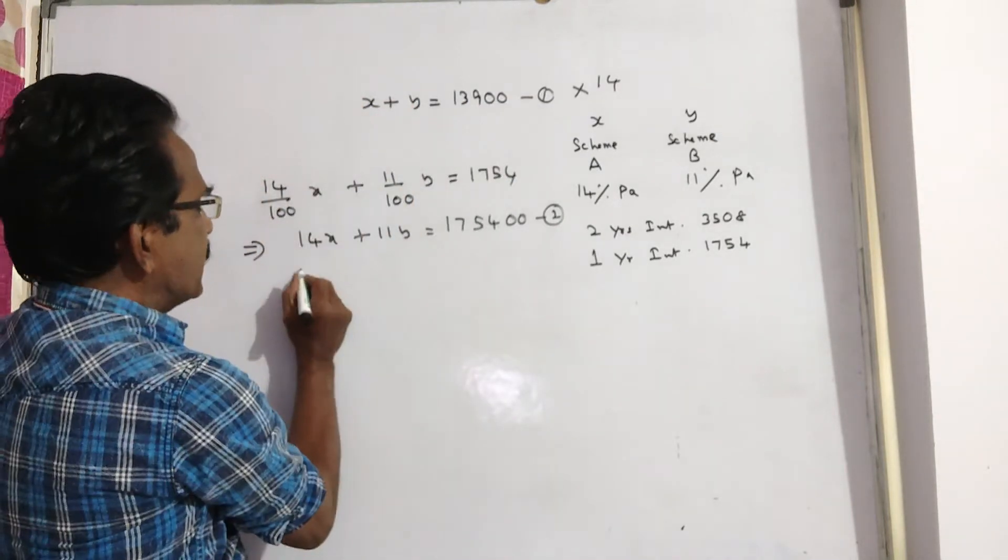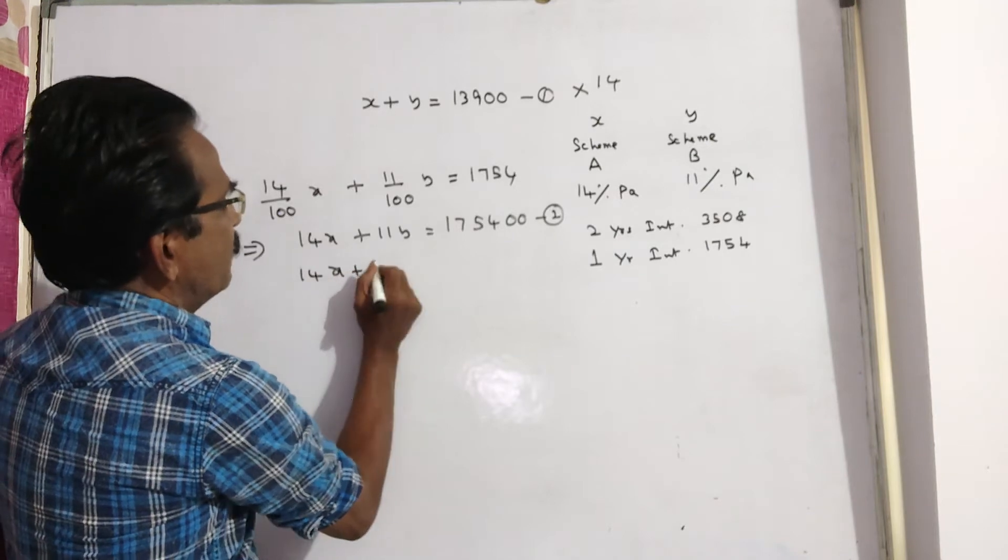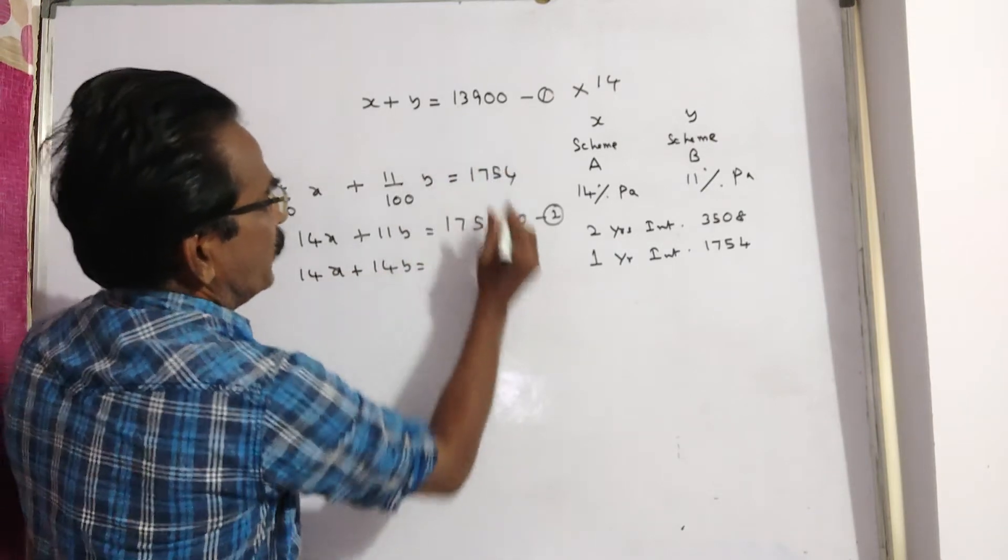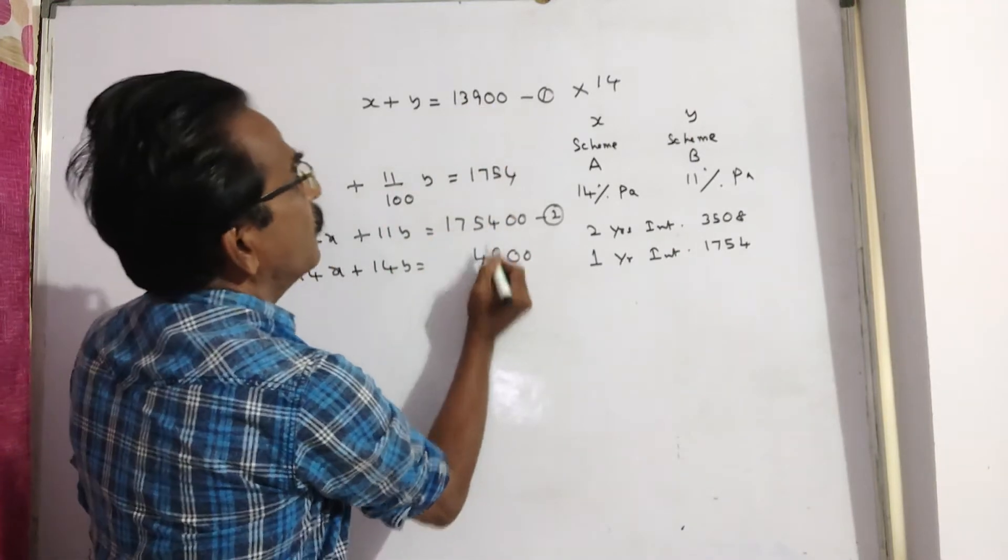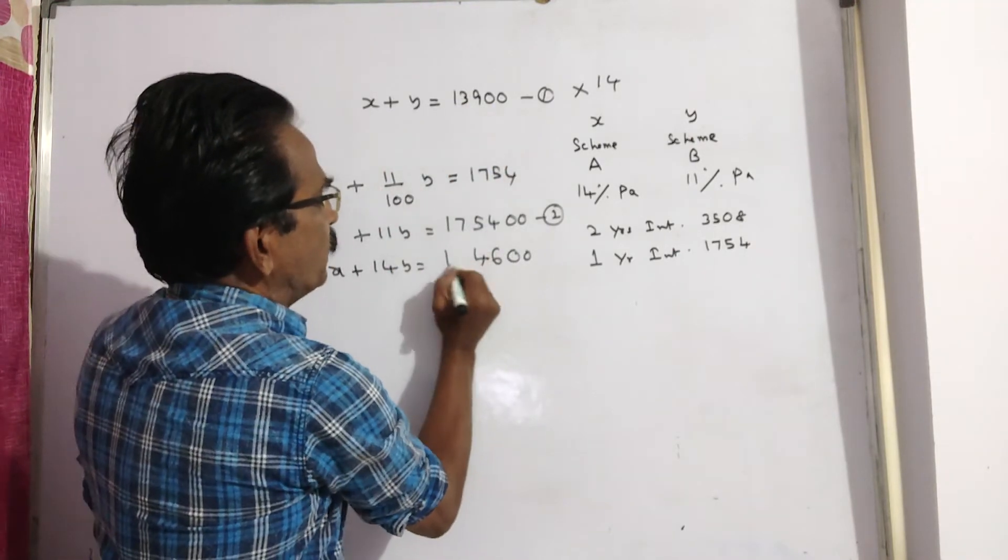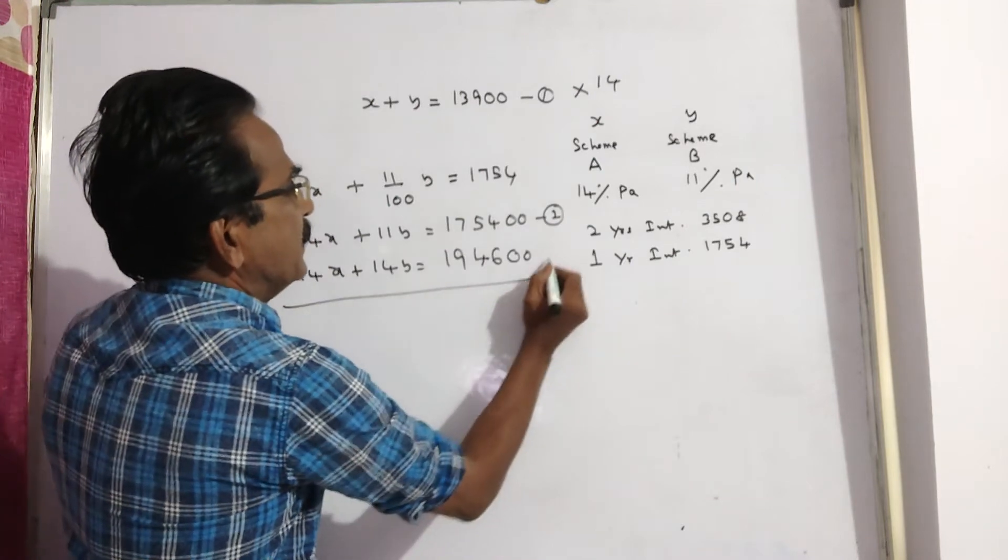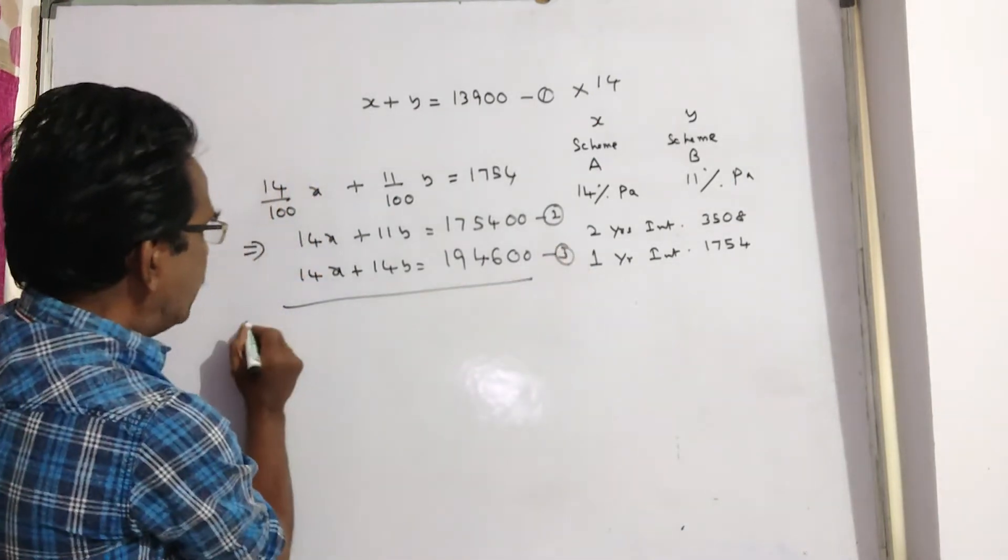So 14X plus 14Y is equal to 14 times this thing. 14 nines, 126, 14 threes, 42 plus 12, 54, 14 plus 5, 19. That's 194,600. Say this is equation 3.